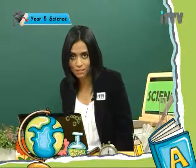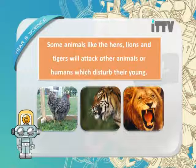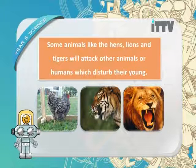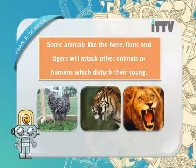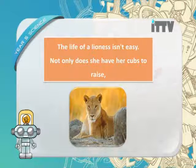Some animals protect their young by attacking their enemies — they are big fighters. Animals like hens, lions, and tigers will attack other animals or humans who disturb their young. This is how hens, tigers, and lions protect their young.